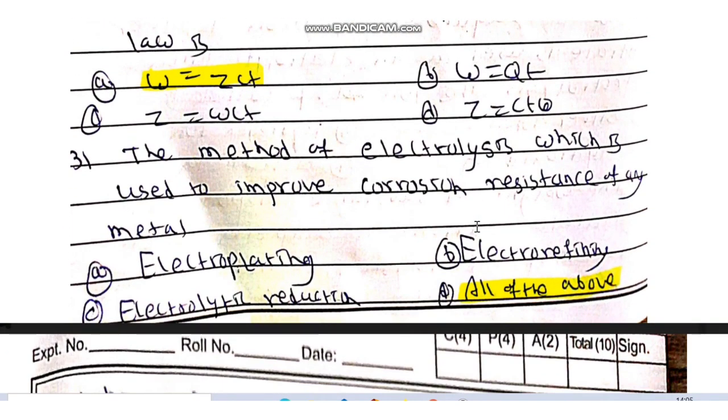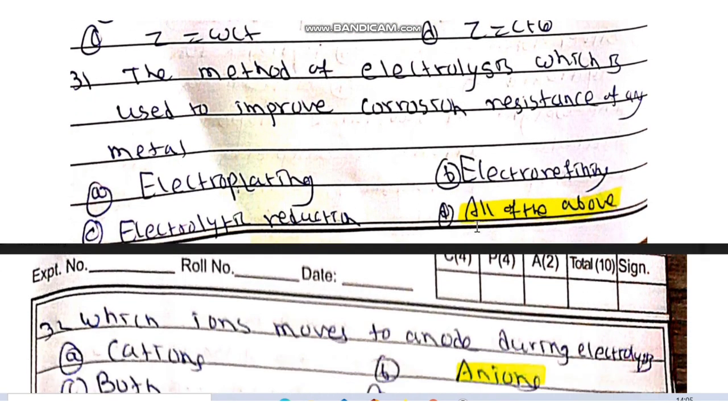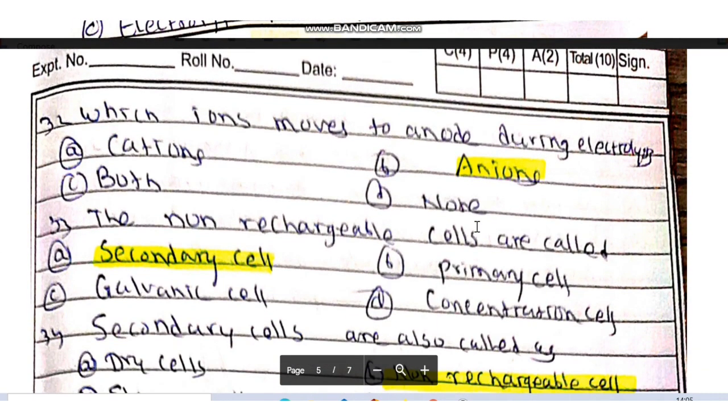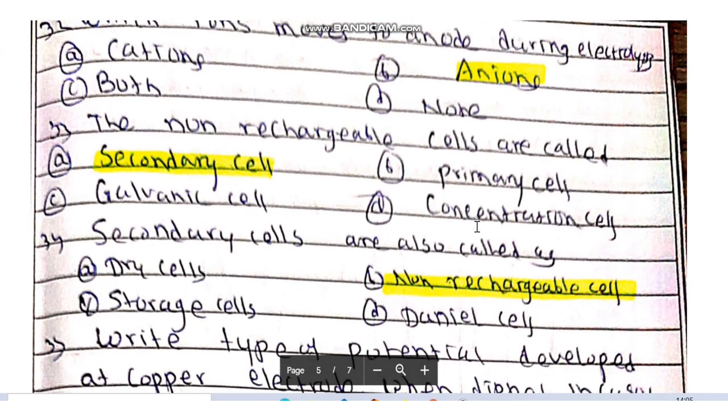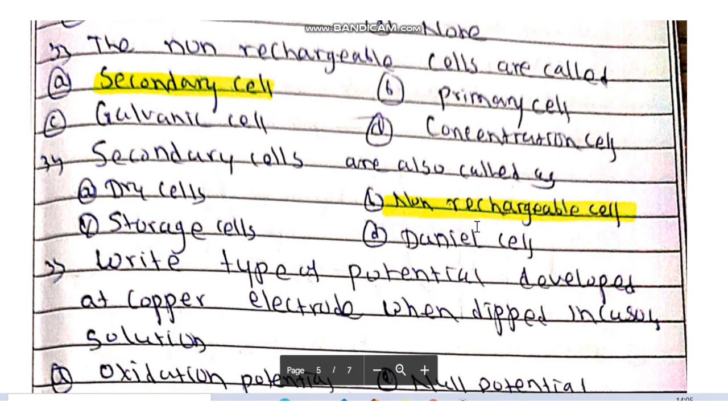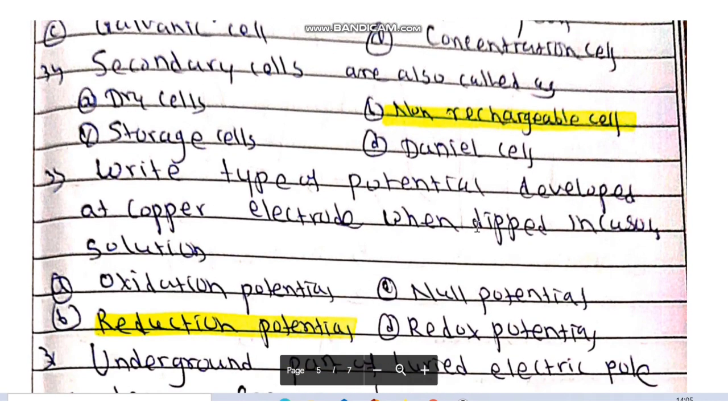The method of electrolysis which is used to improve corrosion resistance of any metal is all three: electroplating, electro-refining, and electrolytic reduction. Which ions move to anode during electrolysis? Anions move to anode. The non-rechargeable cells are called secondary cells.